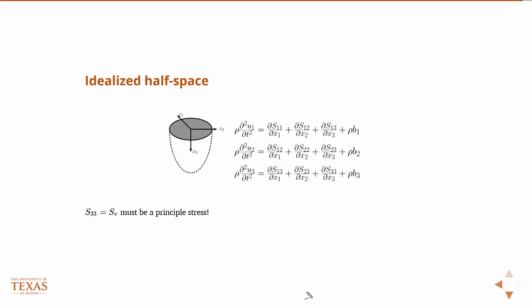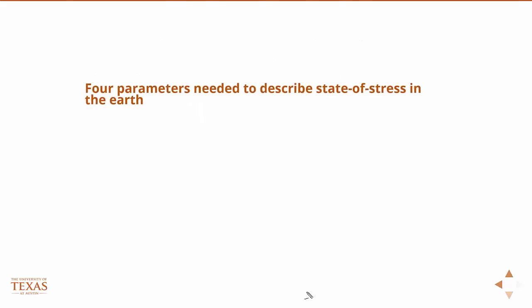So, what this means is that the state of stress in the Earth can be fully characterized with only four things. Because we know one of the directions is always down. All we need to know is one of the other directions, one of the other two. If we know two of the directions, we know they're orthogonal, we can take a cross product to get the third one. So, all we have to know is one of the horizontal directions, and then the three principal stresses, which are S1, S2, S3. They are the eigenvalues of the stress sensor. So, we only need four things to describe the state of stress in the Earth.